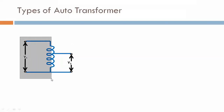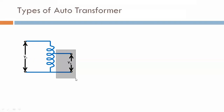The secondary winding is connected to the supply and voltage V1 is given. This creates flux in the core. The flux links with the secondary winding, and EMF is induced in the secondary winding, giving load voltage V2. This is our supply side and this is our load side. The load gets voltage V2 — this is called a step down type auto transformer.